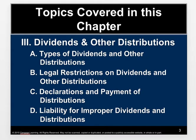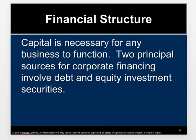We'll finish up the chapter talking about dividends and other distributions, the types of dividends, legal restrictions on dividends, declarations and payment of distributions, and liability for improper dividends and distributions. Let's talk a little bit about the financial structure of a corporation. Capital is necessary for any business to function. There are two principal sources for corporate financing: debt and equity. Debt is mainly in the form of bonds, and equity is the issuance of shares — that's really what this chapter is about.